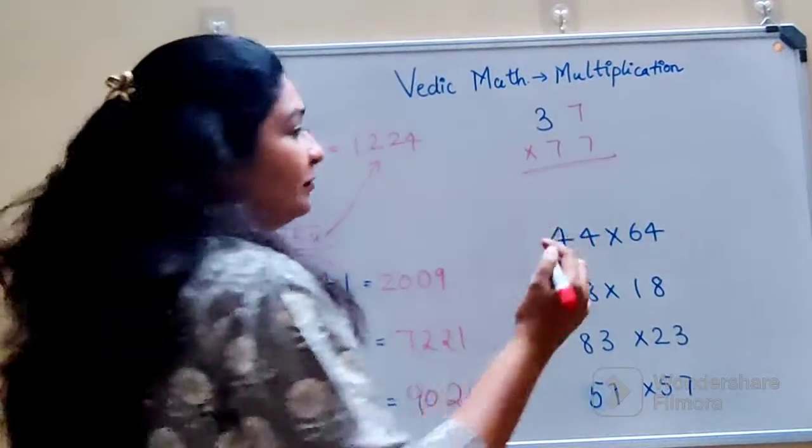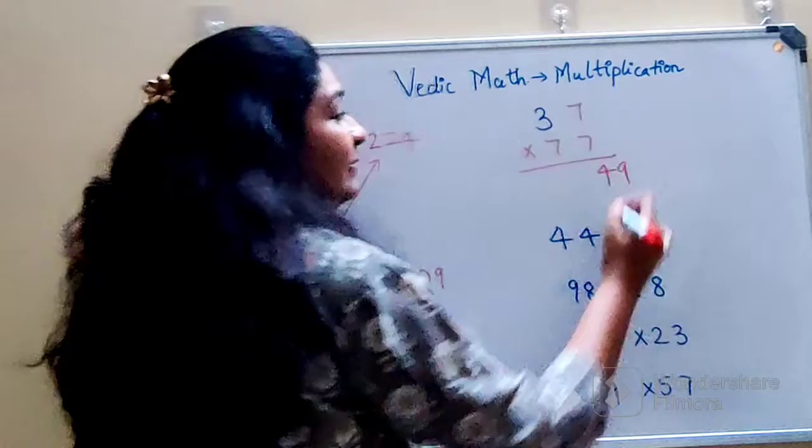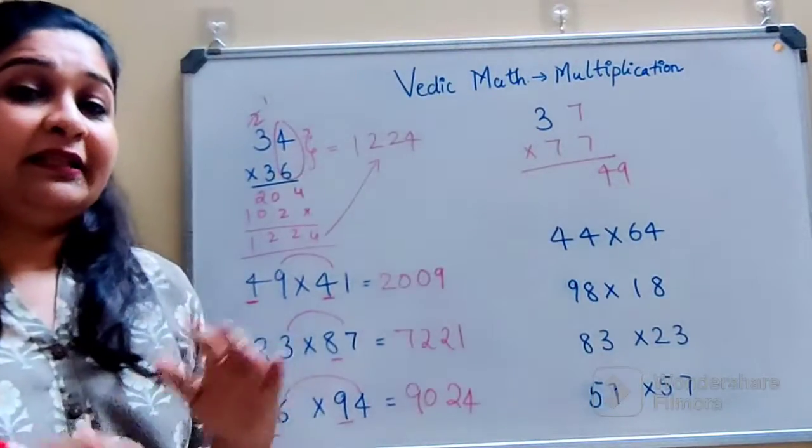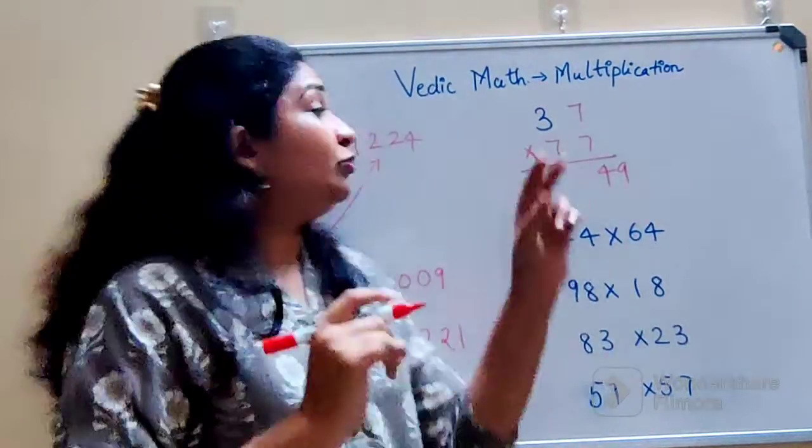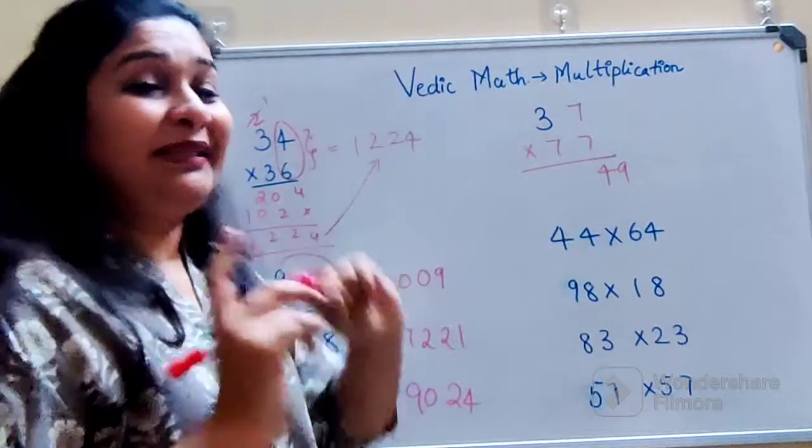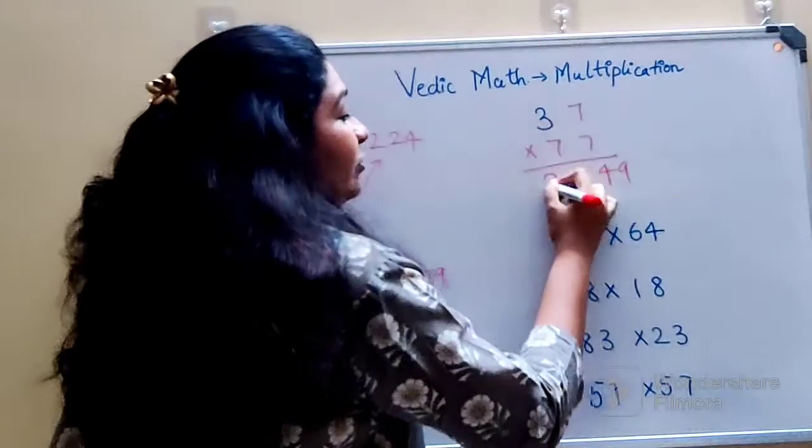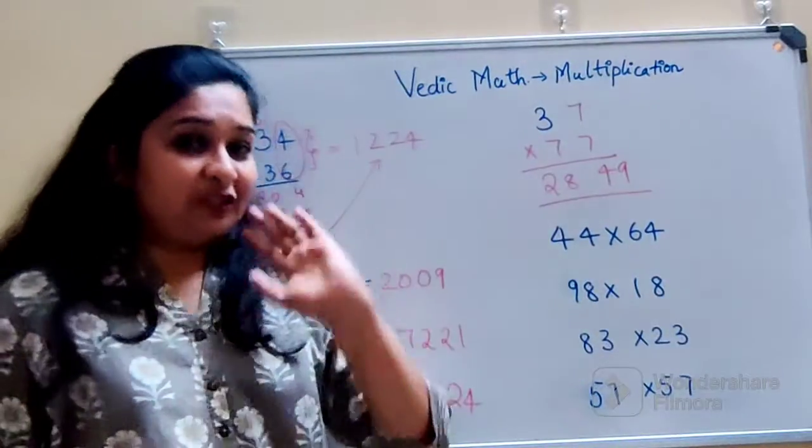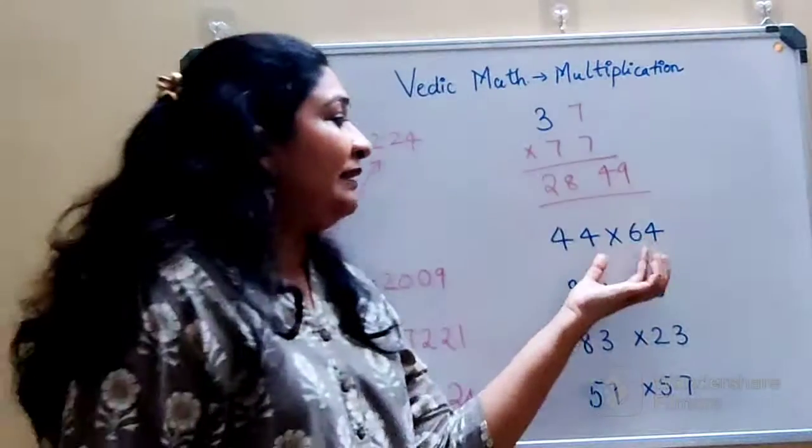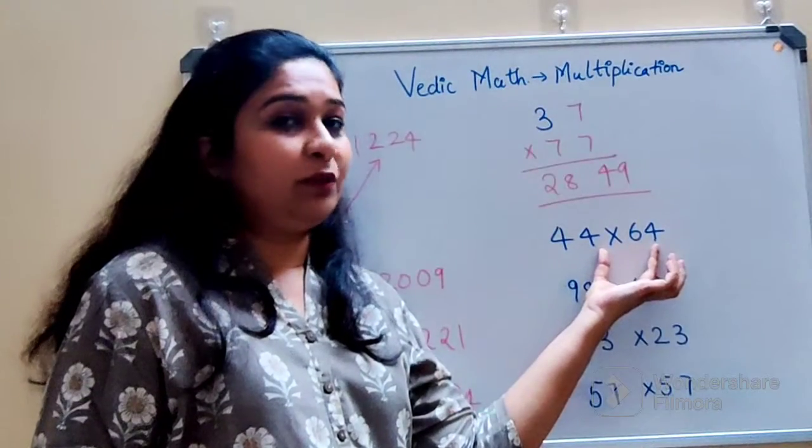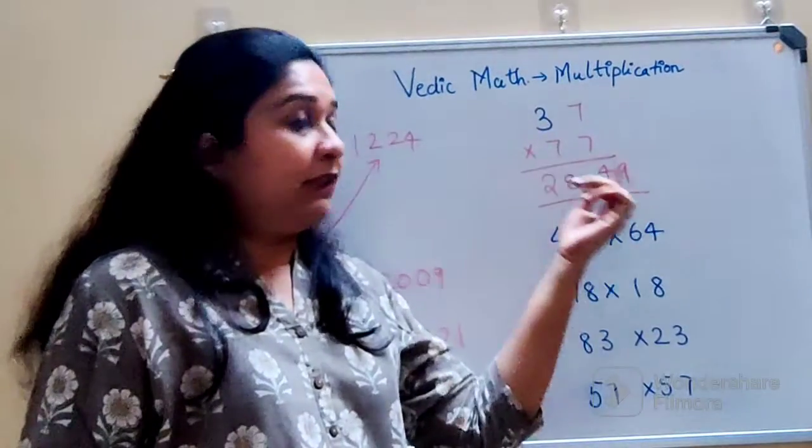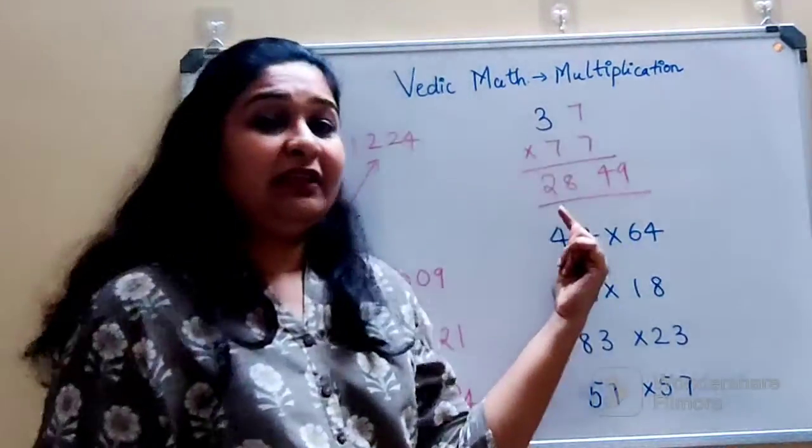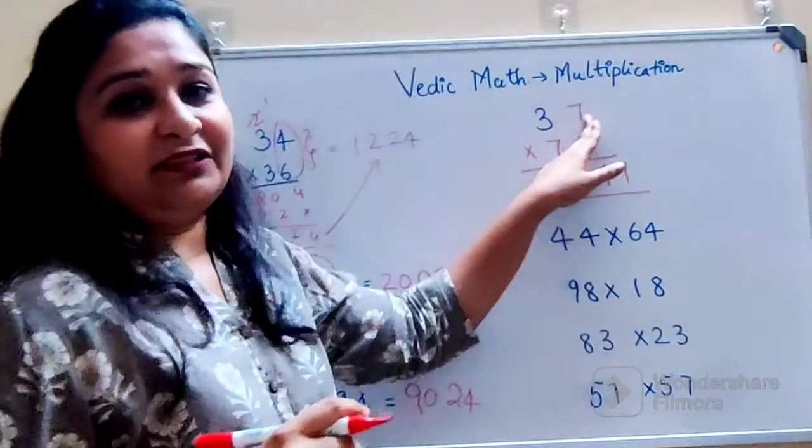So understand, last digit into last digit is what? So basically 7 into 7 gets you 49. Next, what you should do is 3 into 7. What you get is 21. Plus you should just add this number. So 21 plus 7 gets you 28. So that is your answer for this particular multiplication and for this particular trick. Just remember you just multiply the last two digits. So that is 7 into 7 that gets you 49. Then you have to multiply the first part, that is 3 into 7, and then you add the last digit.